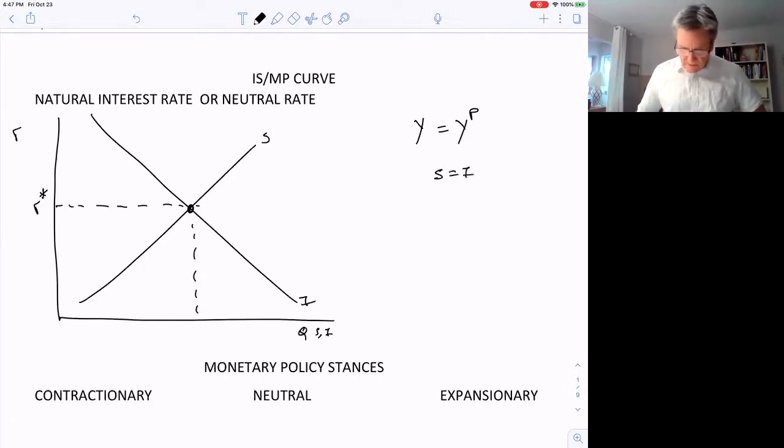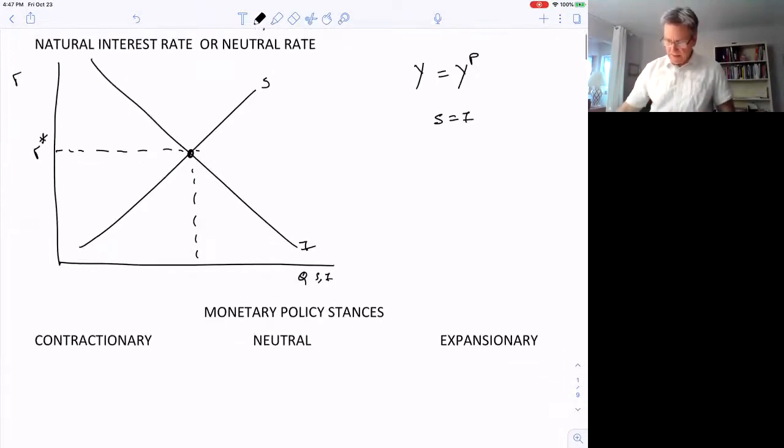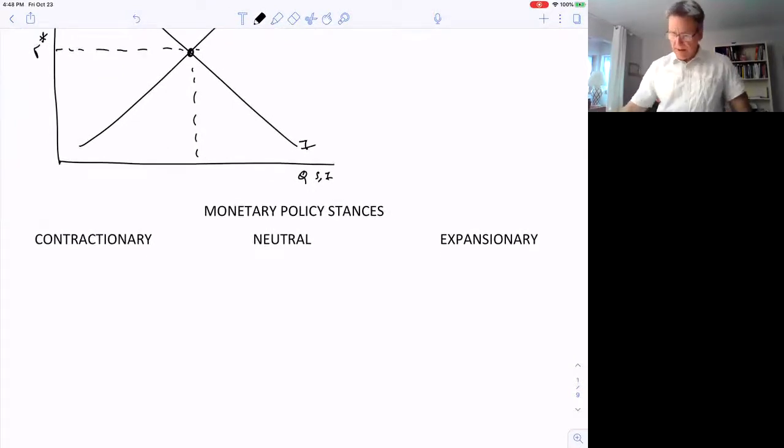It's where savings is equal to investment and it's that long run rate that the rate would be if the Federal Reserve or the central bank wasn't sticking their fingers into the economy and manipulating interest rates. If they just laid off and didn't do anything, what would the interest rate be? That's R star. That's the natural rate of interest. Now, of course, the Federal Reserve is always sticking their fingers in and trying to manipulate the economy for the purpose of stabilizing the economy and stabilizing the business cycle as they're required to do by their mandate from Congress.